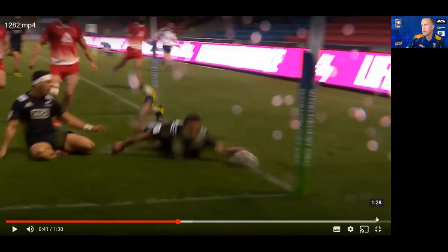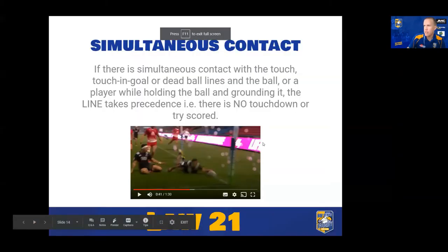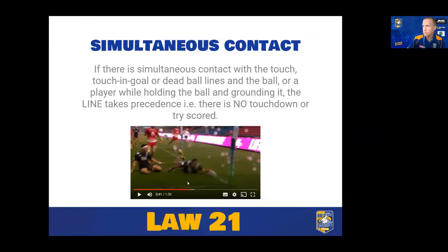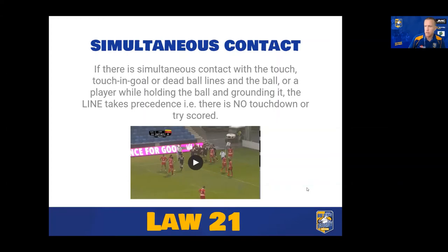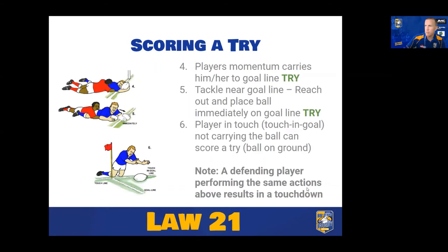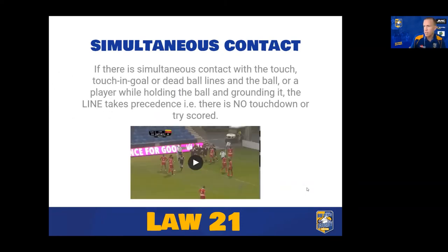We see the ball being grounded simultaneously in the in-goal and on the touching goal lines — the line takes precedence, so it's no try and it's a 22-metre restart. This is quite different from the earlier situation with a player in touch being able to ground the ball and score a try. In that case the ball is already on the ground in the in-goal and their first action is pressing it, whereas here a player is holding the ball and making simultaneous contact with the line, or the ball itself makes simultaneous contact.